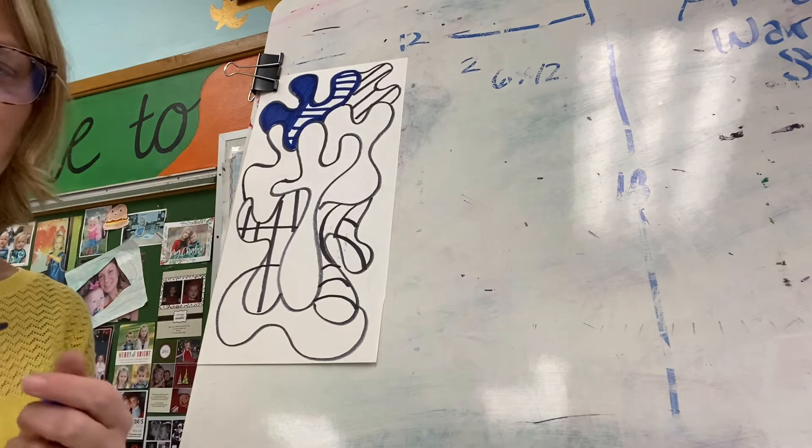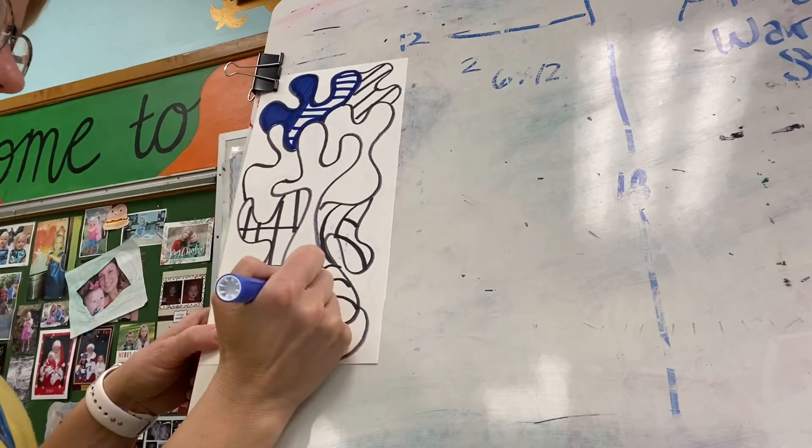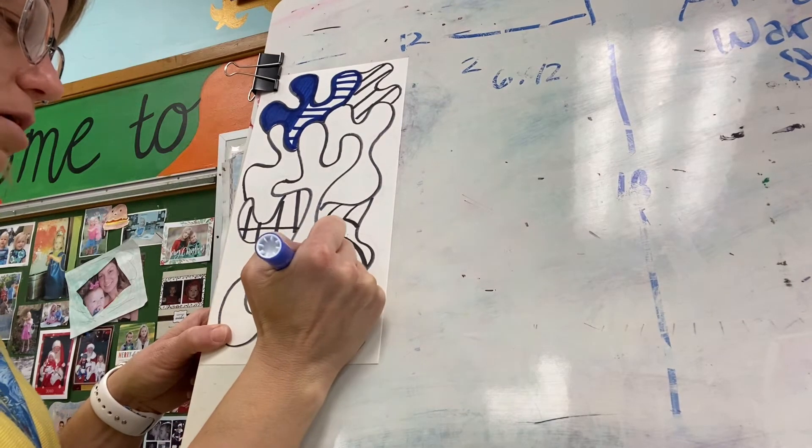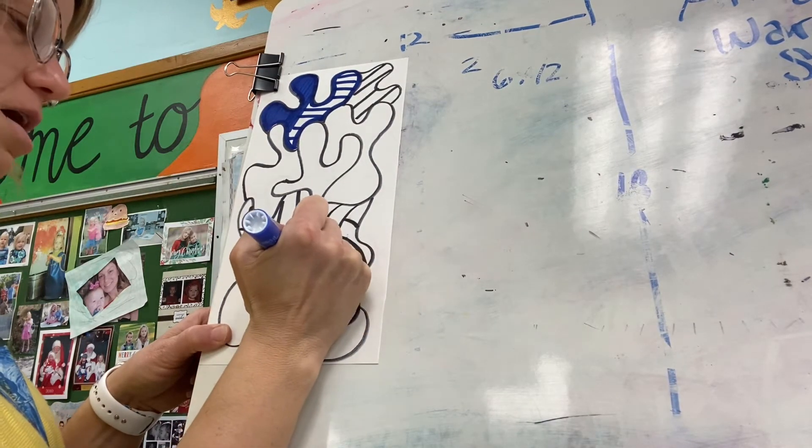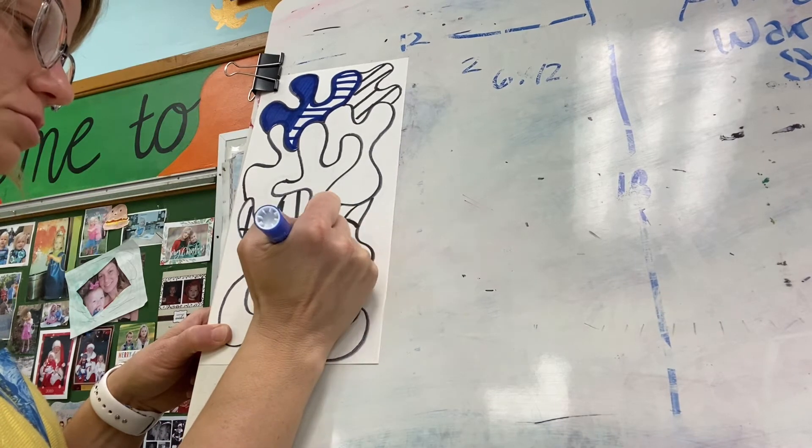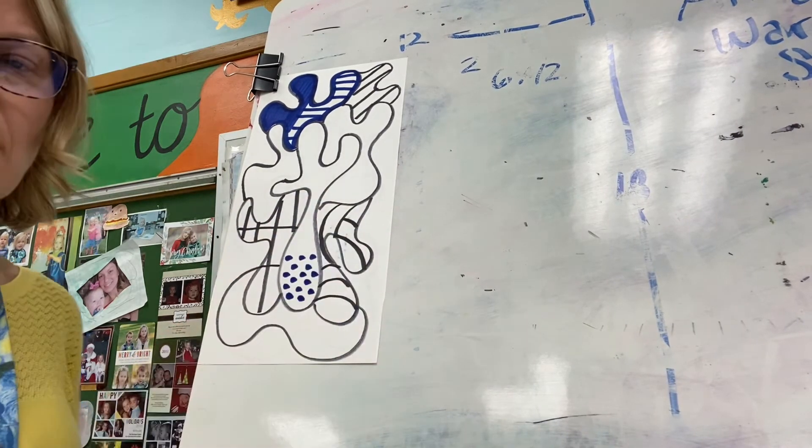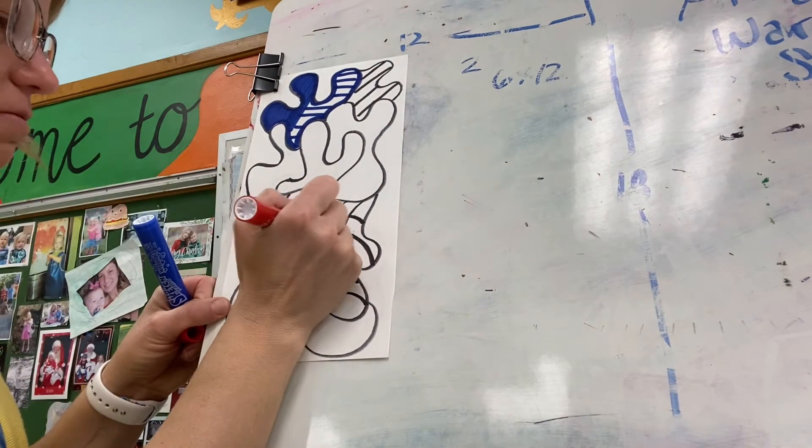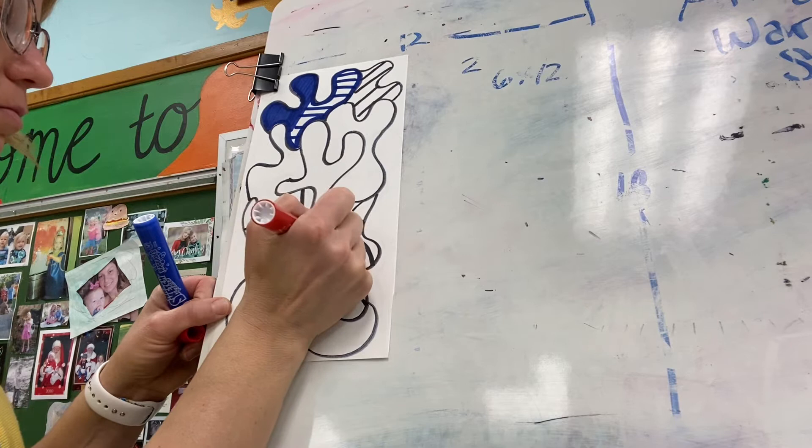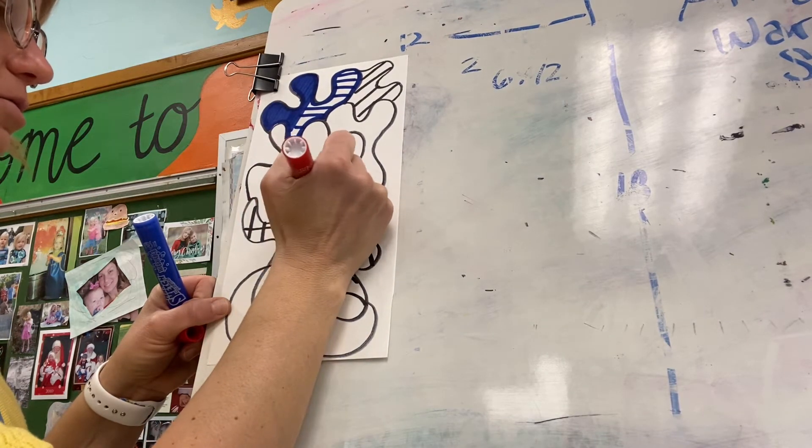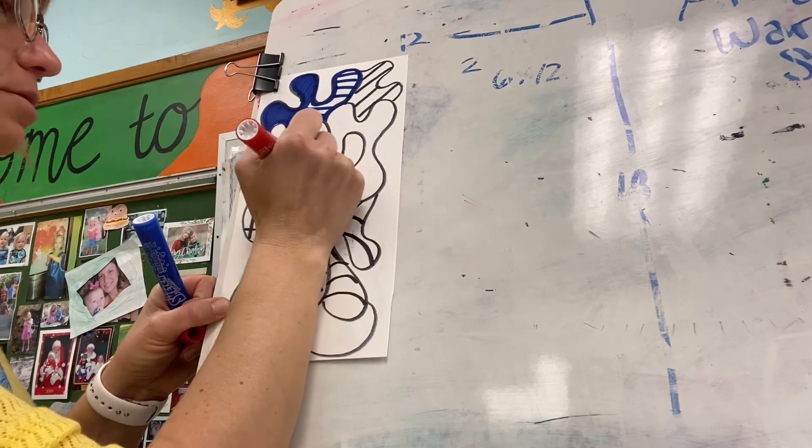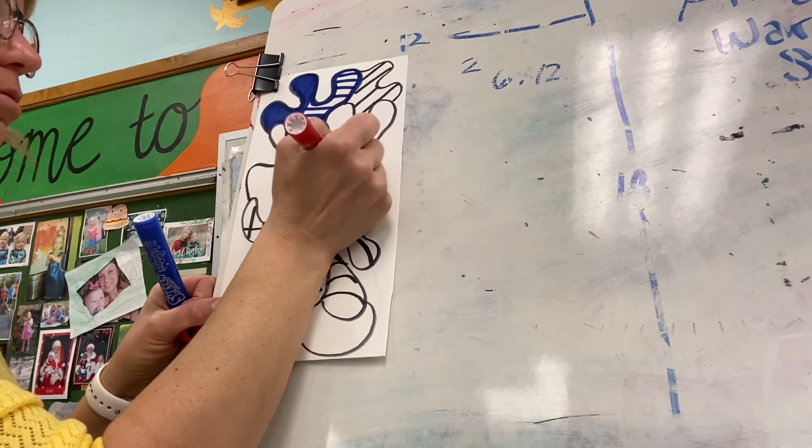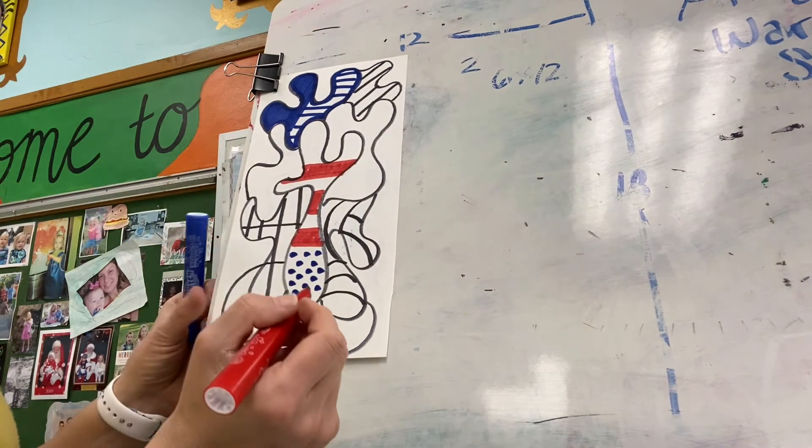You can do polka dots. You can do swirls. You can do zigzags. You can do hearts. You can do words. You can make animals or shapes inside of each section. You can put more than one color inside of each section. But you do have to limit your colors to red, white, blue, and black. Colors do have to be limited.